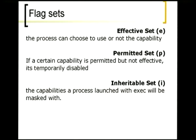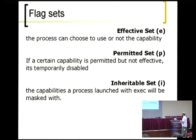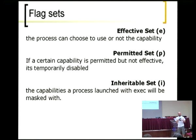Let's talk about capability flag sets. In the permitted set, you have the capabilities that are in your toolbox. In the effective set, it's the capability you currently have in your hand. You can drop a capability from your hand back to the toolbox, and you can get it again from the toolbox. If you drop it from the toolbox, you can't access that capability anymore. It's a way to temporarily disable capabilities. The inheritable set is the amount of capability you allow across an exec syscall. Fork is not included because fork is a copy of memory, so the child gets the same capabilities as the parent.